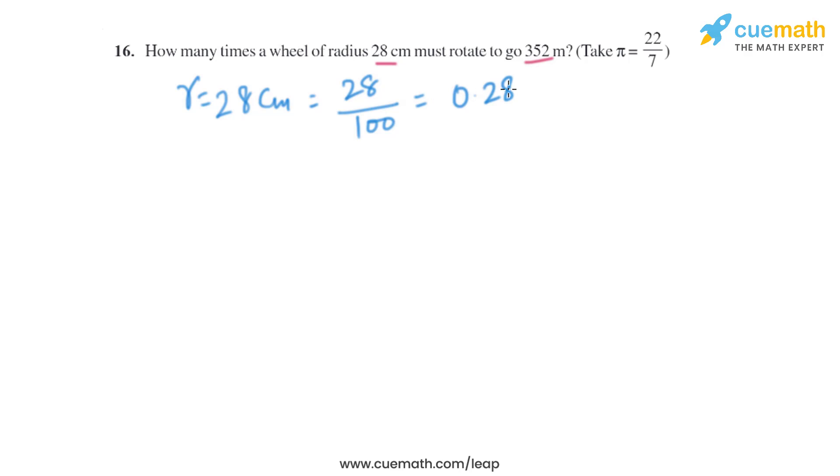Now, the wheel rotates n times. n times the circumference of the circle will equal the distance traveled, which is 352 meters. n is the number of revolutions. Let's find the circumference.